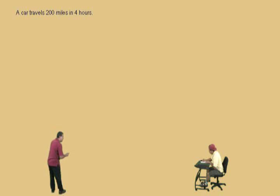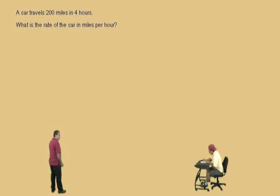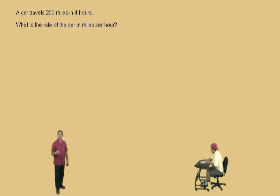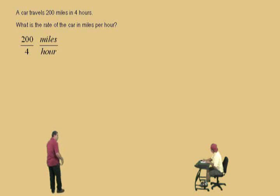A car travels 200 miles in four hours. What is the rate of the car in miles per hour? So you're asked basically how many miles do you go in one hour? That's what we're trying to find. So we start off with 200 over 4. Notice we were asked for the rate in miles per hour, which means miles per hour — it's a ratio of miles to hours.